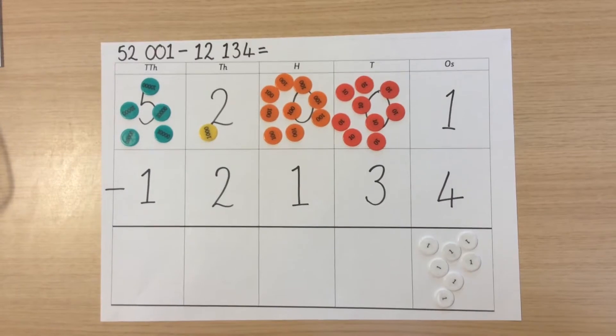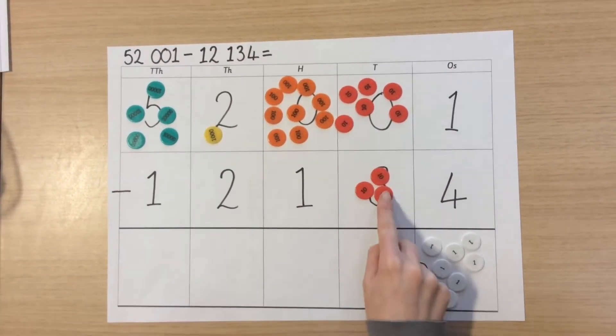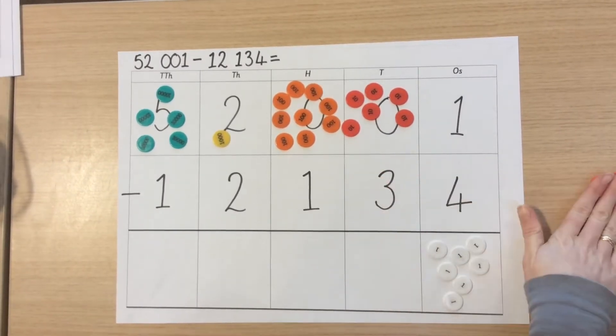We can then complete the same in our tens column. We should have nine tens left, take away three tens. We check them and then we bring them to subtract them.